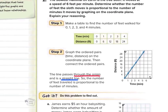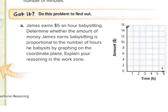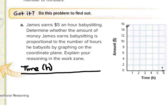Now for our 'Got It' question: James earns $5 an hour babysitting. Determine whether the amount of money James earns is proportional to the number of hours he babysits by graphing on the coordinate plane. Explain your reasoning in the work zone. Just like in the guided example, let's create a table — time in hours and the amount in dollars.